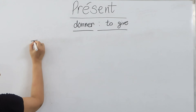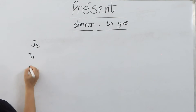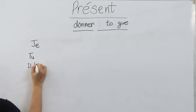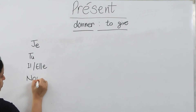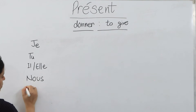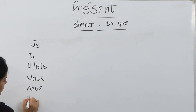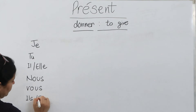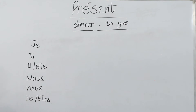First, we'll write all the pronouns: je, tu, il and elle — those are the singular cases — then nous, vous, and ils and elles for the plural cases.